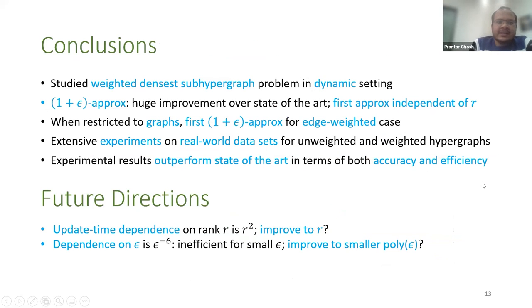So to conclude, we studied the problem of the weighted densest subhypergraph in the dynamic setting and got a near-optimal algorithm, which is the first approximation algorithm with ratio independent of R and the first near-optimal algorithm for the edge-weighted case. We also perform extensive experiments on real-world datasets and show that our algorithm outperforms the state of the art in both accuracy and efficiency. For future directions, our update time dependence on R is R² and on epsilon is ε^(-6). Can we improve it to R, which would be optimal? We're sorry to interrupt, but we're four minutes above time. Okay, so yeah, can we improve the dependence on poly epsilon? Thank you for listening. I'll be happy to take questions now.